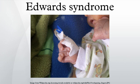Major causes of death include apnea and heart abnormalities. It is impossible to predict an exact prognosis during pregnancy or the neonatal period. Half of infants with this condition do not survive beyond the first week of life. The median lifespan is 5 to 15 days. About 8 percent of infants survive longer than one year. One percent of children live to age 10, typically in less severe cases of Mosaic Edwards syndrome.